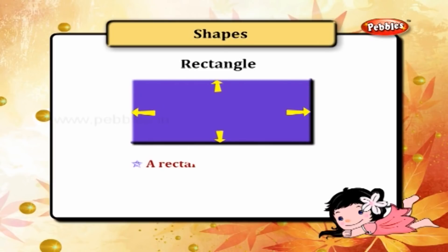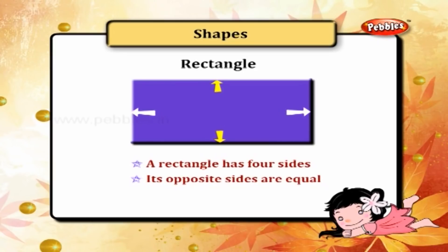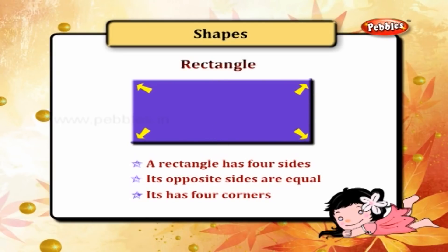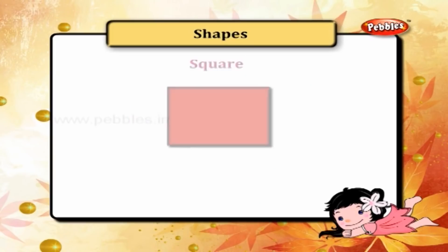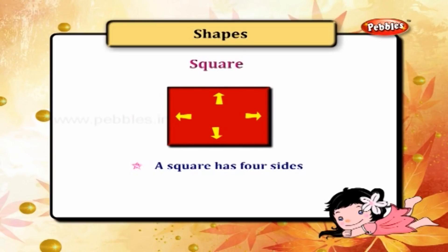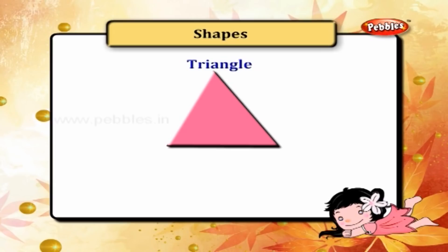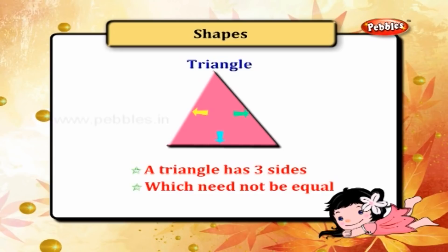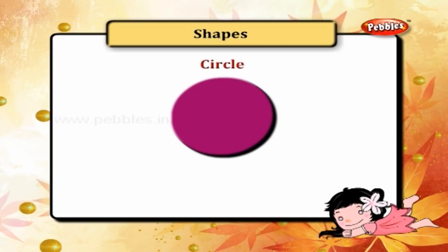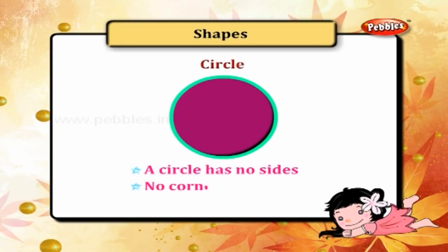A rectangle has four sides. Its opposite sides are equal, and it has four corners. A square has four sides; all its sides are equal, and it has four corners. A triangle has three sides which need not be equal, and three corners. A circle has no sides and no corners.